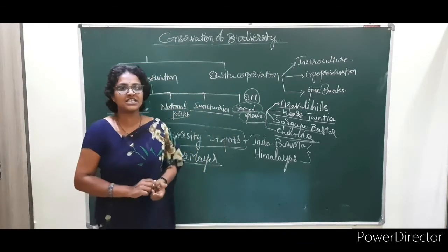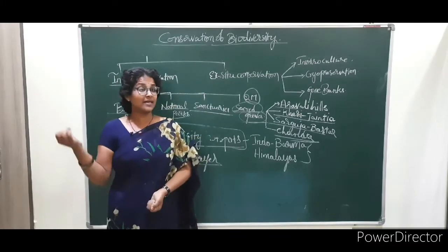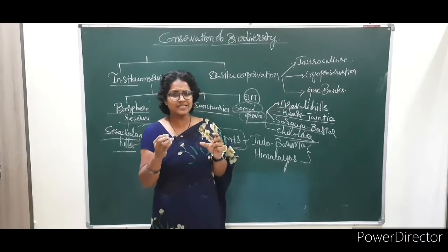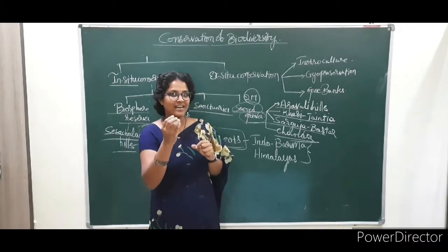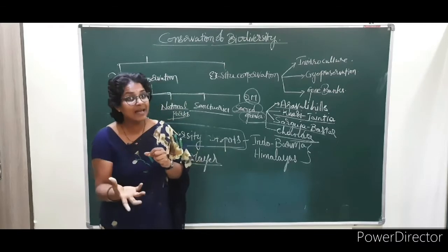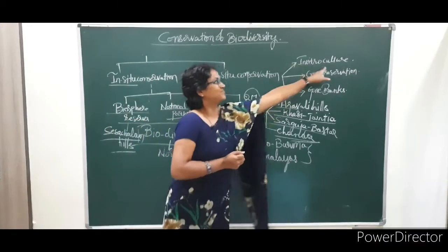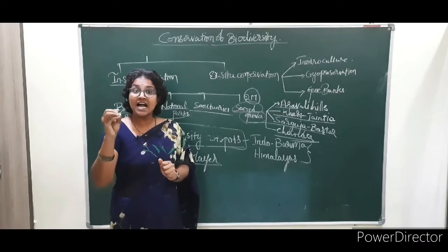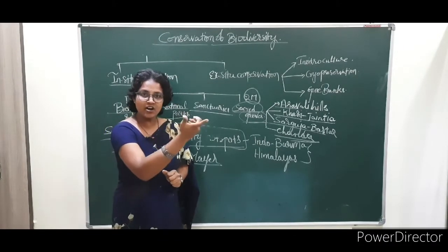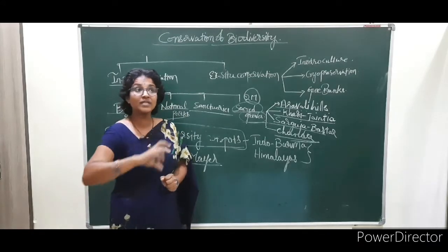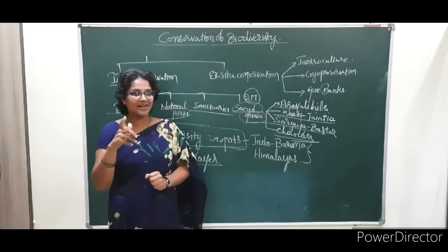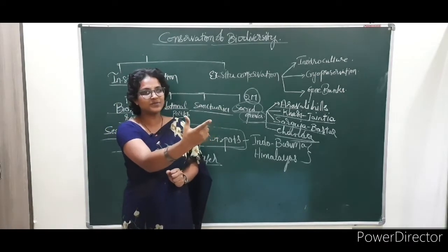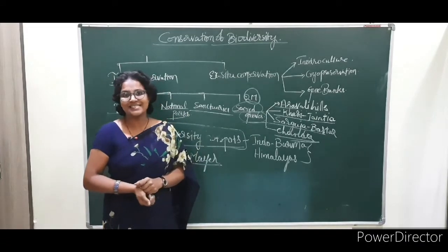Ex-situ conservation involves bringing genes from endangered species. We bring the gene of a particular animal and grow the animal in the lab up to the 8 to 16 cell stage, then introduce it into the womb of the mother. That is called in vitro culture.